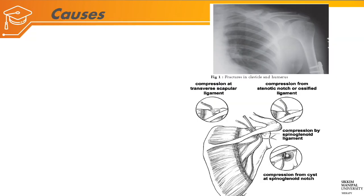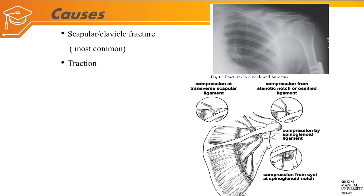What are the main causes for suprascapular nerve injury? Fracture of the scapula or clavicle is the most common cause. Any traction or trauma to the scapula, clavicle, or directly to the nerve can also cause this injury.